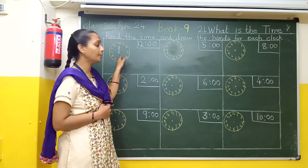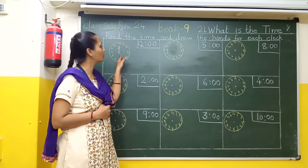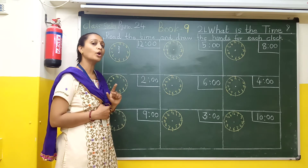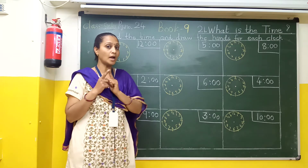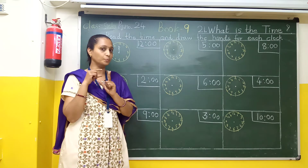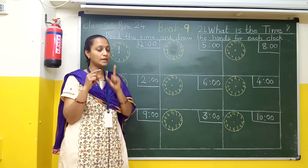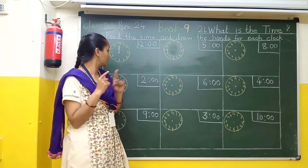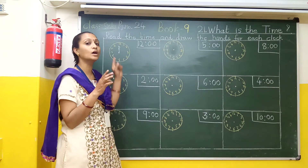Here there is one example which we have done in book 9 — 12 o'clock. In 12 o'clock, the small hand is on 12 and the big hand is also on 12. So here both hands are together.